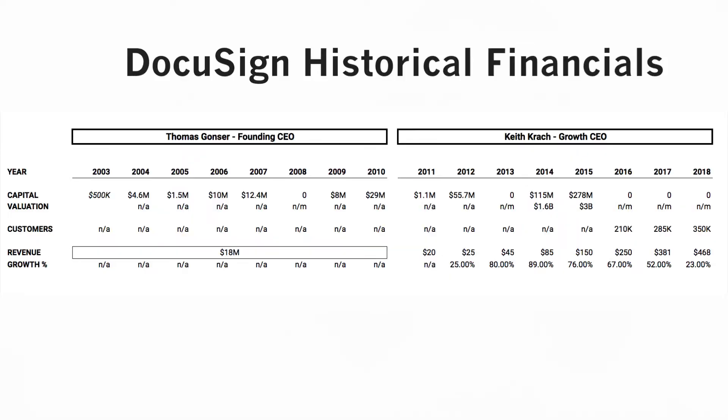So let's go back to DocuSign. At the DocuSign IPO, the founding CEO Thomas held just 1.5% of the company, whereas Keith's shares were 6.3%. Why would the new CEO have more shares than the founding CEO? The answer lies in the history of the company. We can actually split it down the middle — the first part of the company's life and the second part.